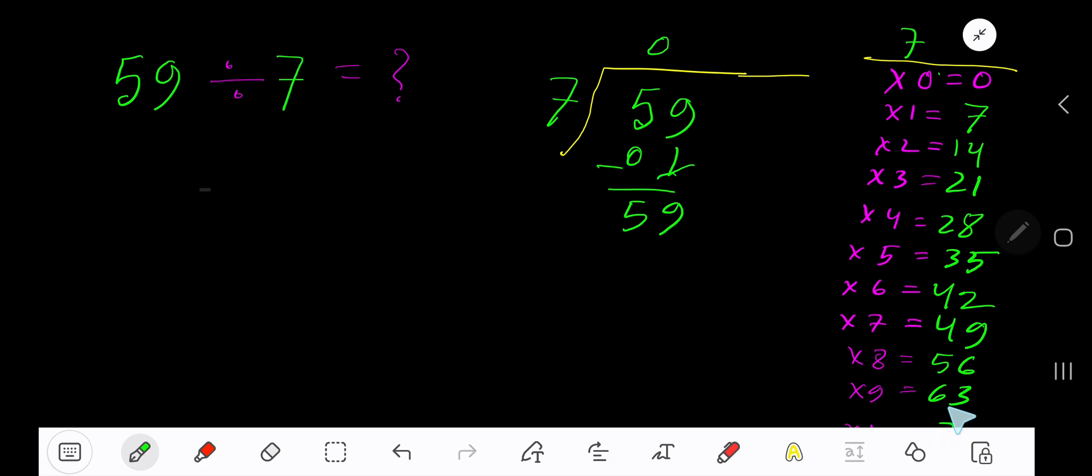9 times is 63 which is greater. 8 times is 56 which is less than 59. So 9 times 63 is greater, so we have to take 8 times. 8 times 7 is 56. Subtract - we are getting 3.